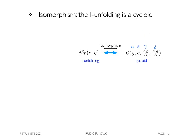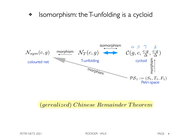In the paper, the isomorphism between the cycloid and the T-unfolding is given. As it is a folding of the Petri-space and the colored net is a folding of the T-unfolding, the colored net is also a folding of the Petri-space. The isomorphism is defined using the generalized Chinese remainder theory.